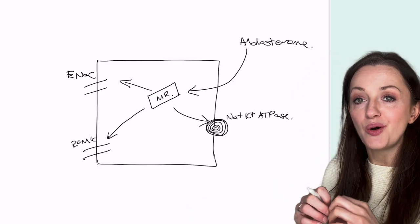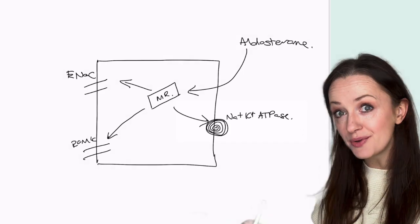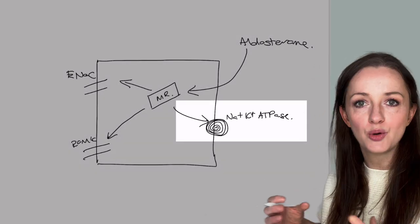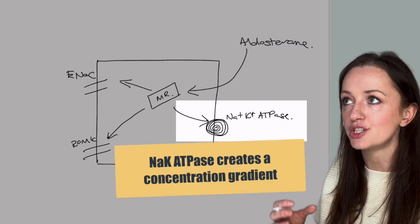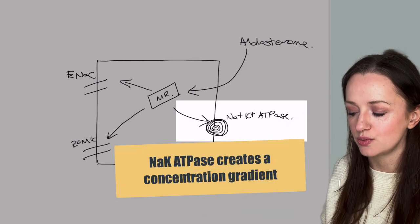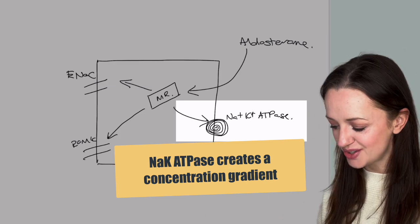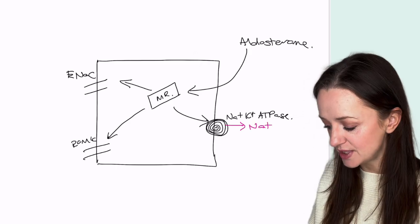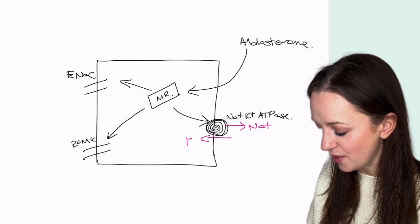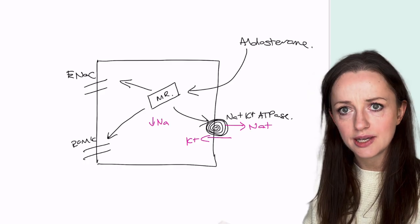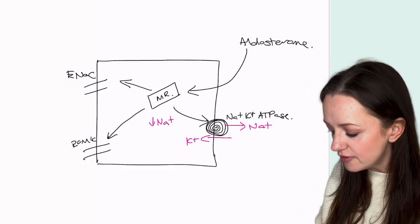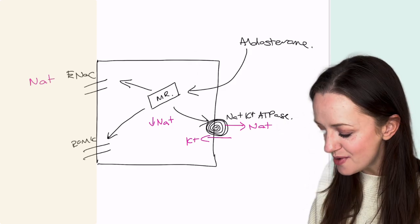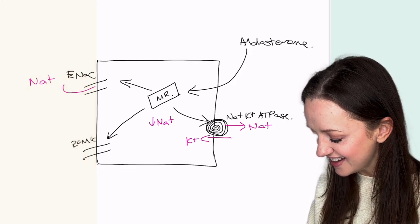Now these channels all work together — it's kind of like a rig. We'll start with the sodium-potassium ATPase. Around the kidney and elsewhere, this is really put on planet earth to keep sodium in certain compartments or to change the concentration gradient of sodium, and here it's all about that concentration gradient. The sodium-potassium ATPase is going to move sodium into the body and exchange that for potassium. All of a sudden we have reduced sodium inside the cell, which creates a lovely concentration gradient for sodium coming in from the urinary space, and that sodium moves through ENaC, this sodium channel here.